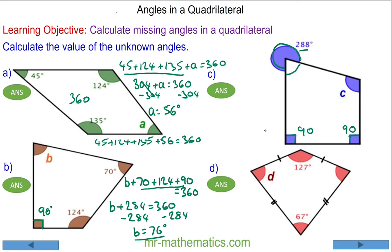These angles are about a point with the interior angle, so this will be 72 degrees because they add up to 360. 360 take away 288 equals 72.